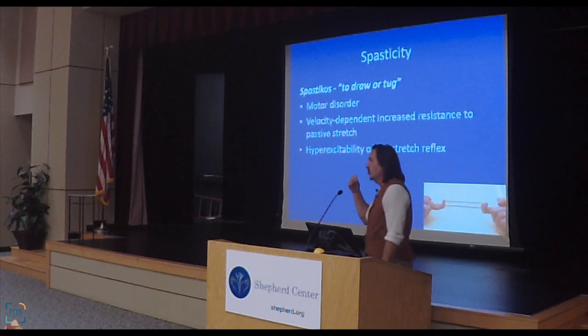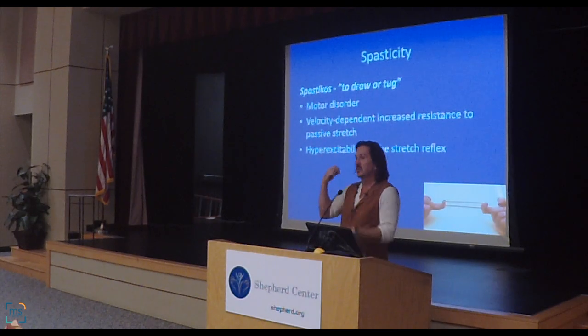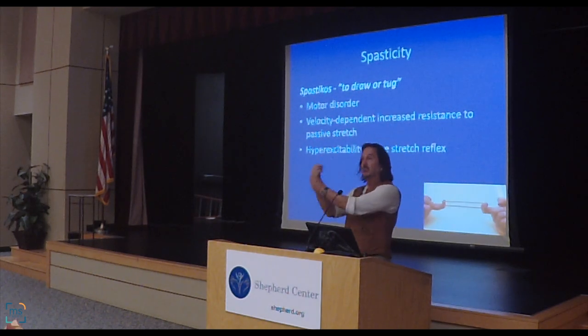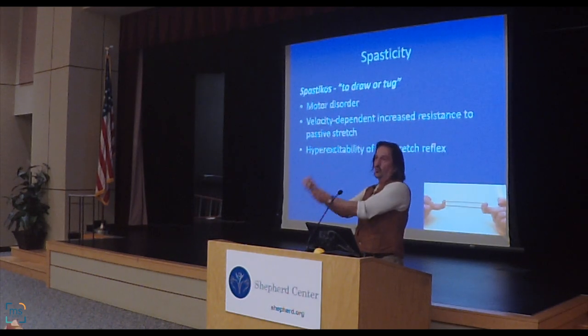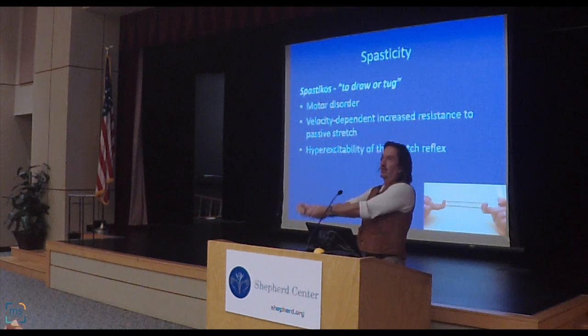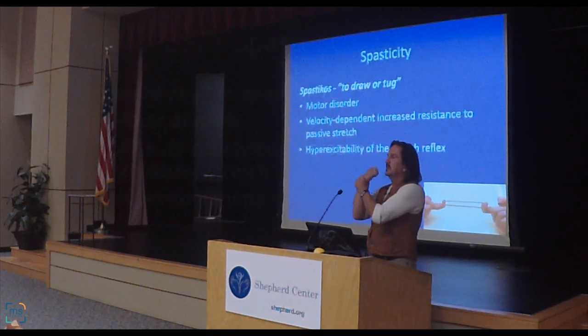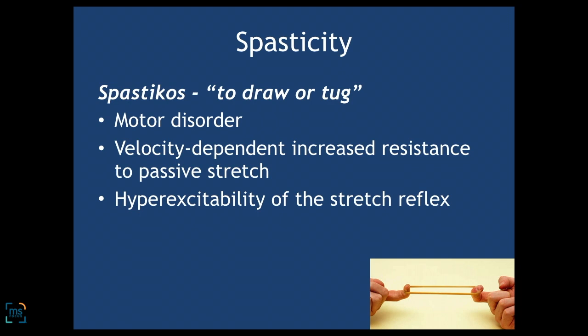Normally, if your muscle tone is unaffected by MS, we can just move a joint passively. If I grab your arm or your leg, I can move it. With spasticity, you start feeling tightness. When we talk about velocity-dependent, the faster I move it, the more it tightens up. That's important when we think about stretching with multiple sclerosis.